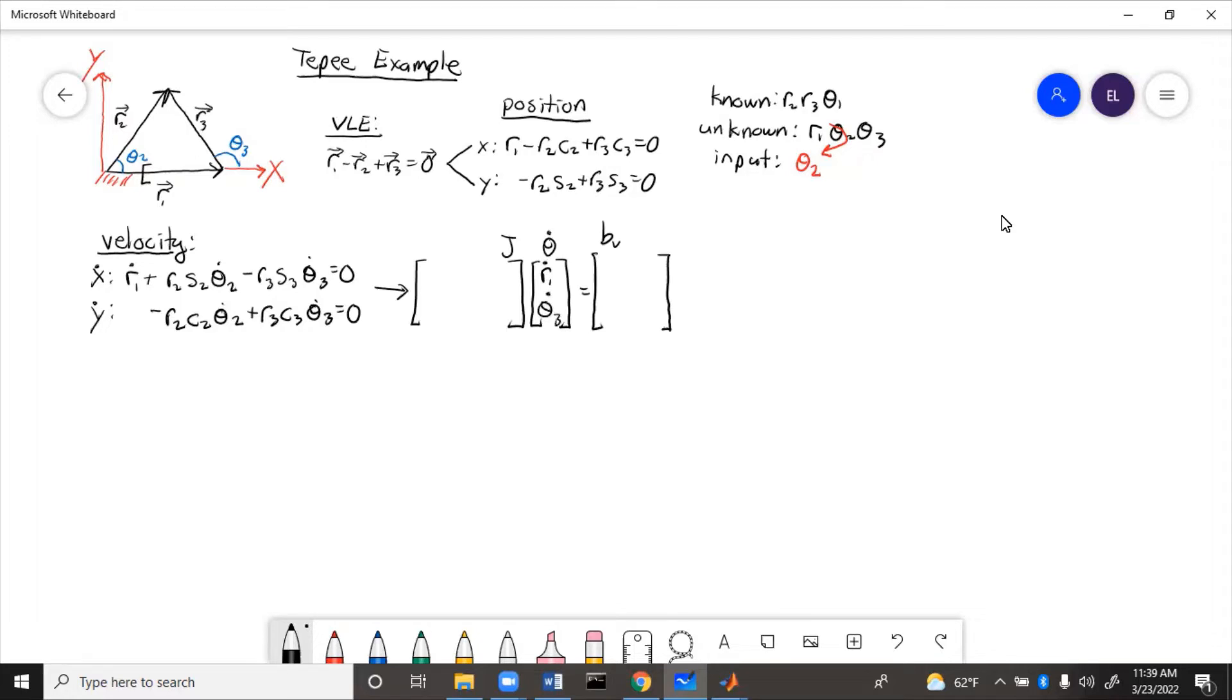And then J is going to be their coefficients. So the first part or first row corresponds to X, second row corresponds to Y, first column corresponds to R1, second column corresponds to theta 3.